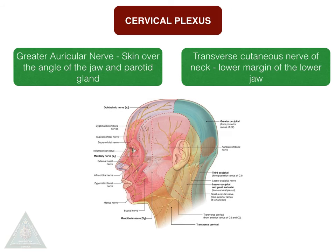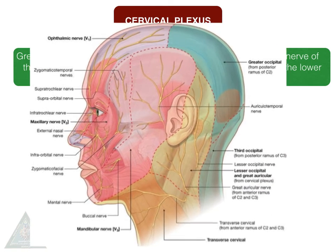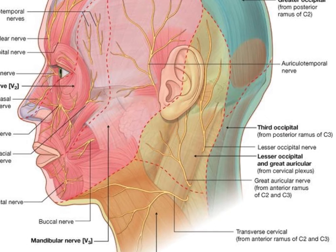The branches from the cervical plexus are the greater auricular nerve, which supplies skin over the angle of the jaw and parotid gland, and the transverse cutaneous nerve of the neck, which supplies the lower margin of the lower jaw. Here we can see the area supplied by these two nerves.